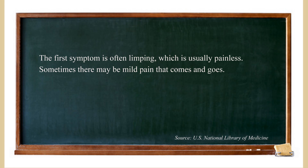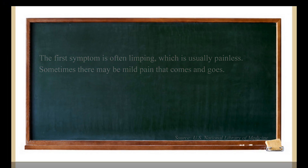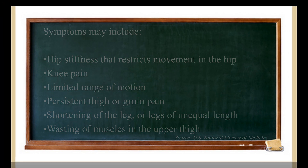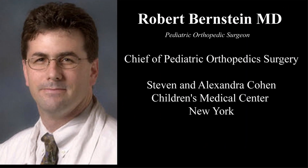Sometimes Perthes disease is a very mild abnormality, particularly in younger patients, and physical therapy and anti-inflammatories is all that is required. If the child is older or the involvement of the femoral head is greater, sometimes we will place the child into a body cast with the legs apart to try to help contain the femoral head within the cup and allow it to form in a more rounded fashion. In more severe cases, sometimes we have to do surgery.